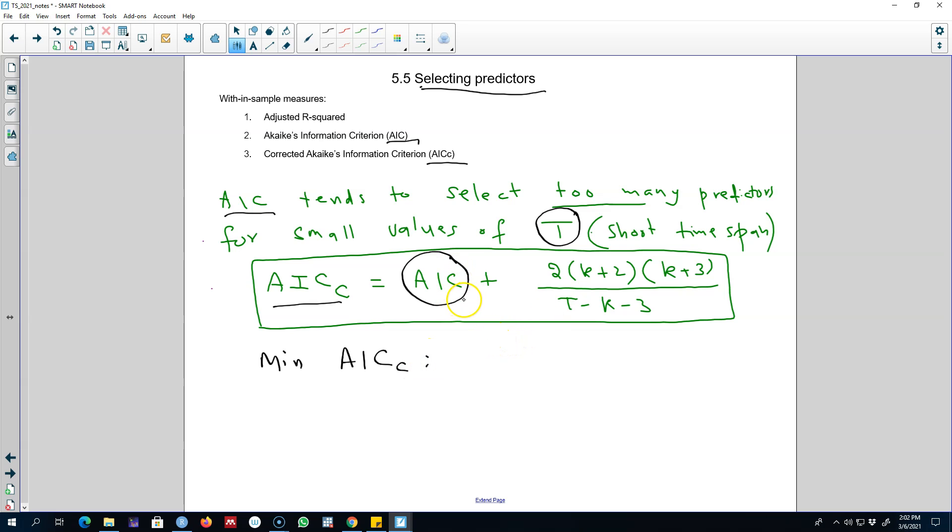Essentially, we will choose a model which gives us a minimum value of this criterion as well, because this criterion contains AIC in it, and remember this contains sum of squared residuals, hence we want to minimize this error. So again, we will choose a model which gives us a minimum AIC corrected.